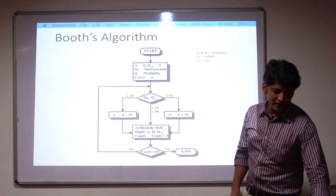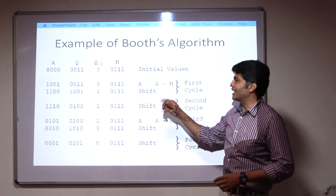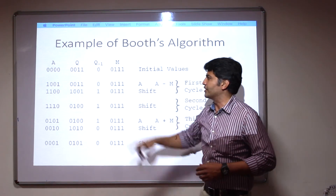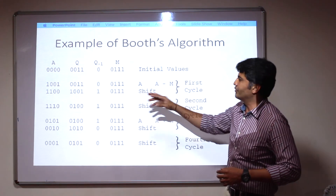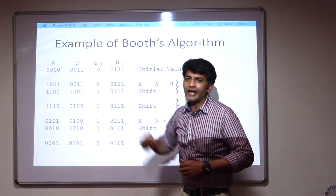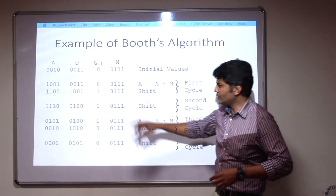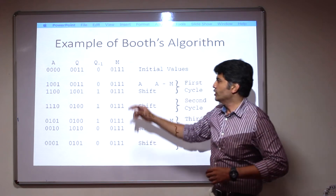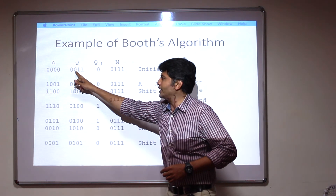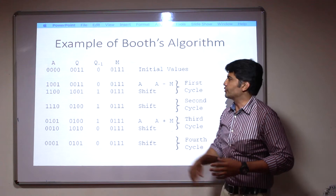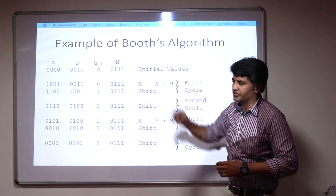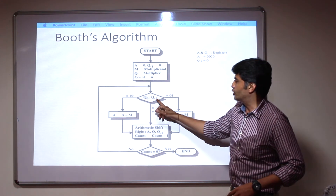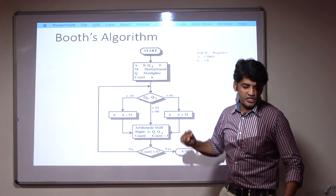Now we will go to the example. We are going to take the two values: 7 and 3. The multiplicand M is 0111, which is 7, and Q is the multiplier 0011. Q-minus-1 and A registers are initialized to 0. From the Q register we take the value of Q-naught at position Q0, Q1, Q2, Q3. These are the initial values of all the registers. Now we need to verify the conditions for Q-naught and Q-minus-1.